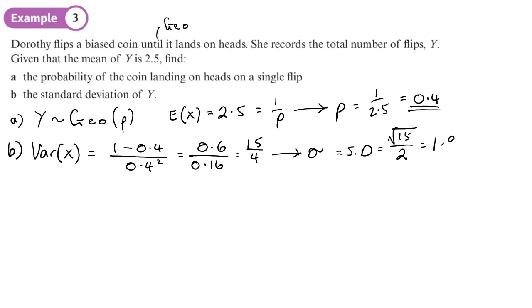So let's do square root of 15 over 4, and we're going to get about 1.936491... so to three significant figures, we'll give our answer as 1.94.